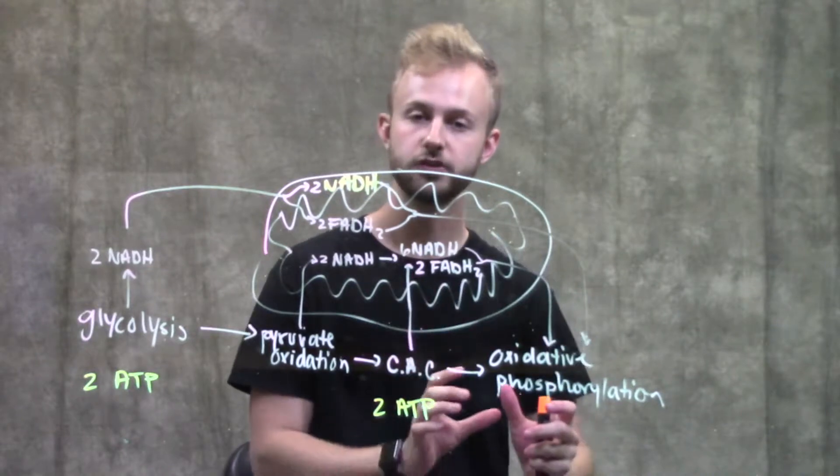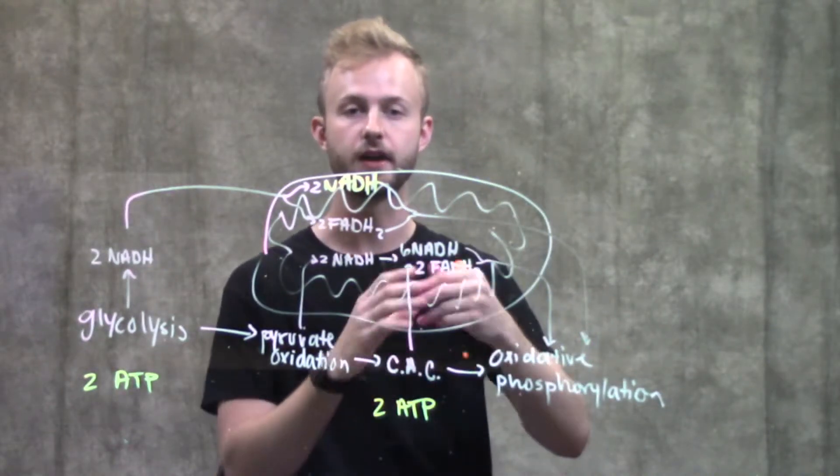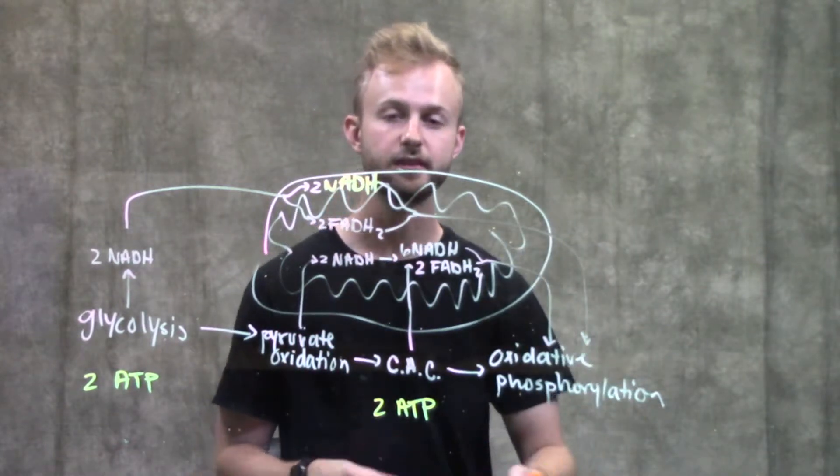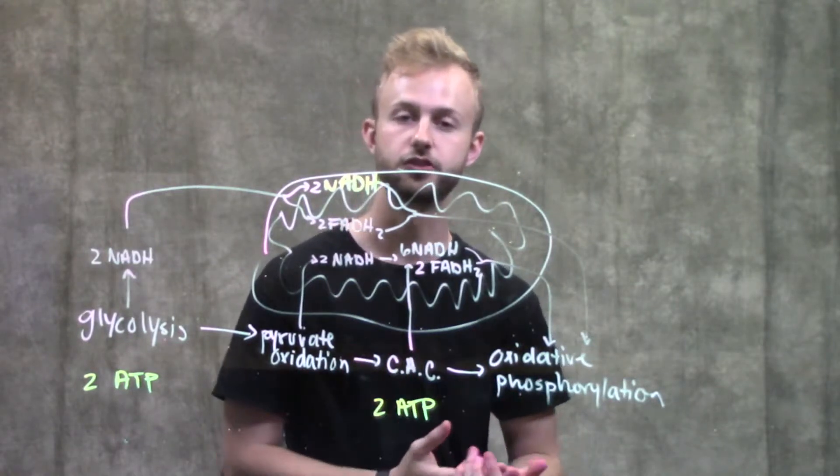When we get to the electron transport chain, we're going to drop those electrons off and use them to pump protons to form a proton gradient that will then flow back down through ATP synthase and allow for oxidative phosphorylation to take place and ATP production to occur.